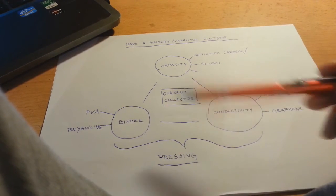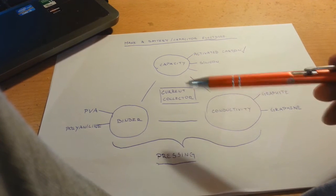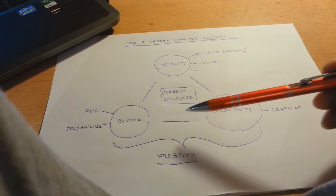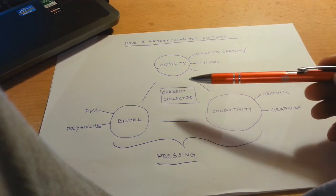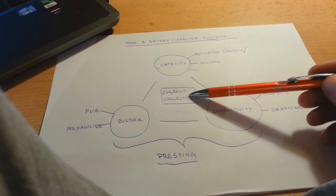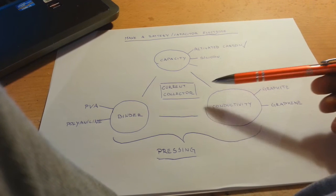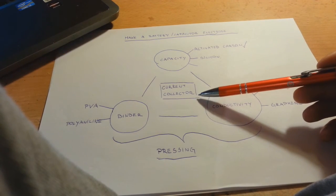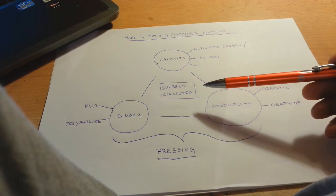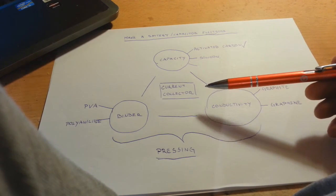All these three mix together and all these three put on your current collector. The current collector is very important because if you make a battery without current collector you will get your voltage but the current will be very low.